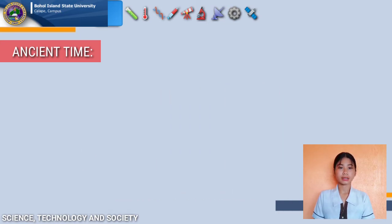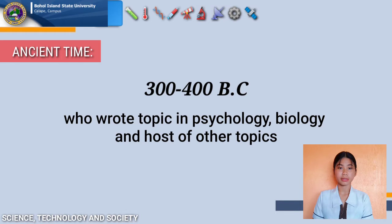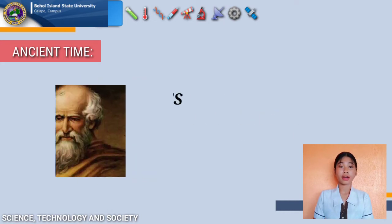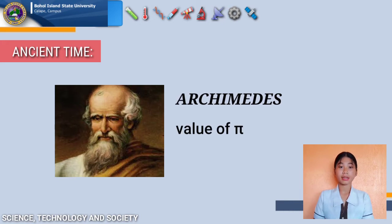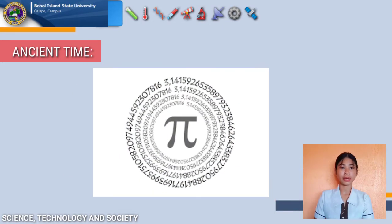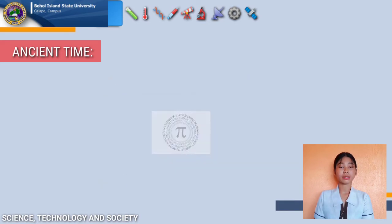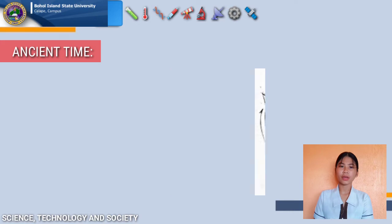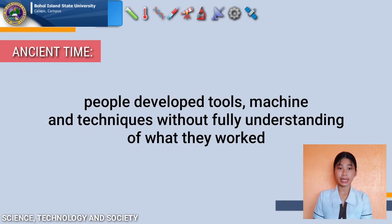From around 300 BC to 400 BC, there was a rise in the number of philosophers who wrote on psychology, biology, and a host of other topics. One of these was Euclid, known as the father of geometry. We also have Archimedes, the founder of engineering mechanics, who calculated the value of pi as 3.14159..., still used to this day. Archimedes also invented the water pump, the pulley system, the iron claw, and the odometer. However, people during this period developed and utilized tools, machines, and techniques without fully understanding how or why they worked physically or chemically.